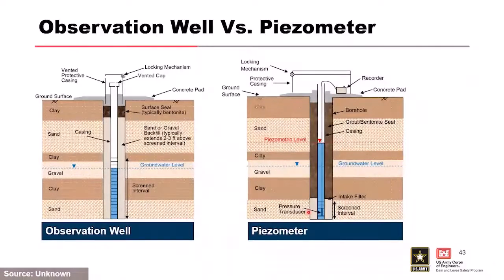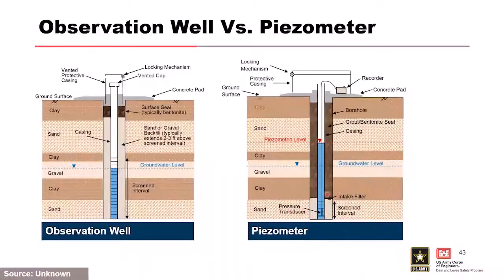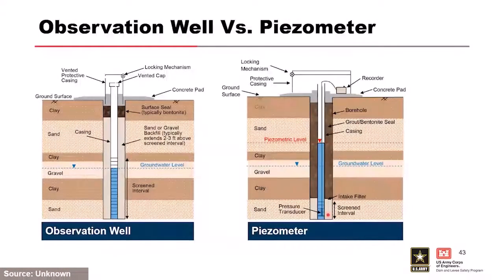Observation wells are completely open — the sanding interval is the entire length of the drill hole, averaging groundwater level across all pervious zones. A piezometer, by contrast, targets a certain zone: only the interval of interest is sanded, and everything else is backfilled with bentonite — typically at least a three-foot bentonite seal — followed by grout. Put bentonite up against the sand to prevent grout from infiltrating your sand pack. Surface seals are required for environmental reasons.